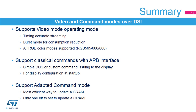The DSI host supports video mode operation with timing-accurate streaming, burst mode to reduce consumption during blanking periods, and several RGB color encoding formats to optimize bandwidth usage. The DSI host supports commands through its APB interface; DCS or generic commands can be issued to the display even when video mode is working. Commands are used for display configuration at startup and for maintenance operations when the application is running. The DSI host can also use Adapted Command Mode to update a display's graphics RAM without using the CPU or DMA controller, working via the LTDC to transmit write commands to the display.